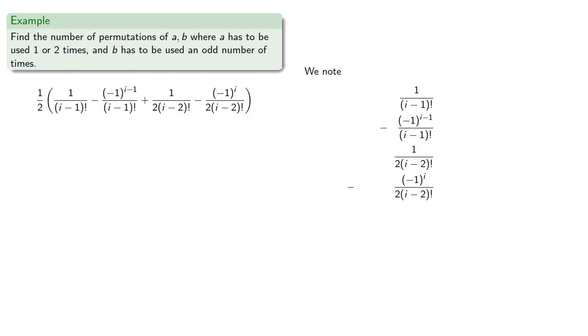So our coefficients are these expressions, and we need to get an i factorial in the denominator. So here, we're missing a factor of i, so we'll multiply by i over i to get i factorial in the denominator.